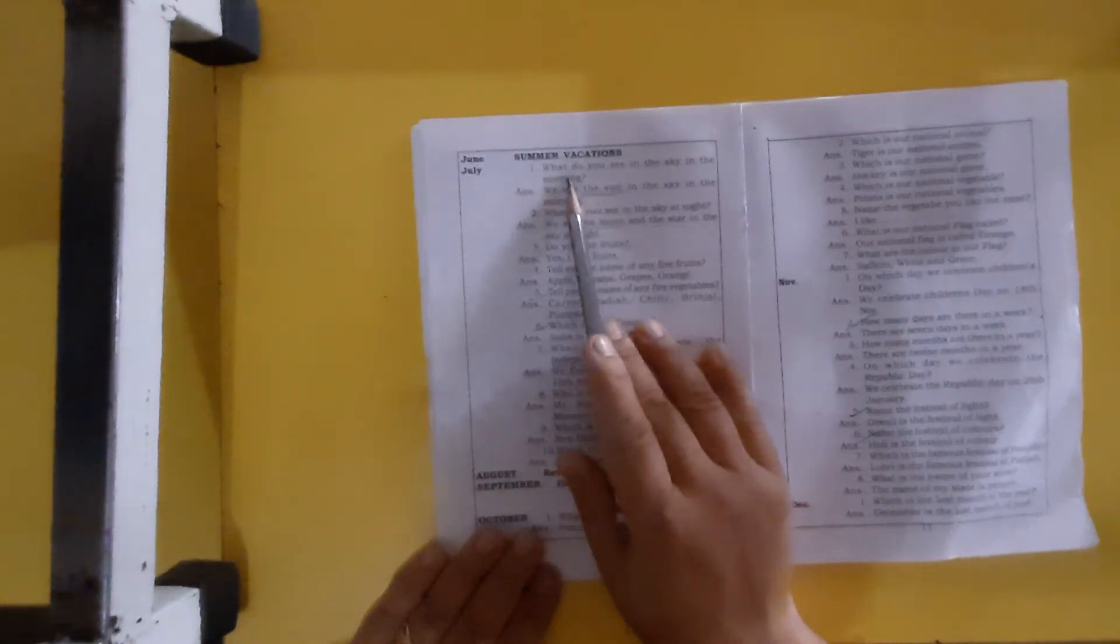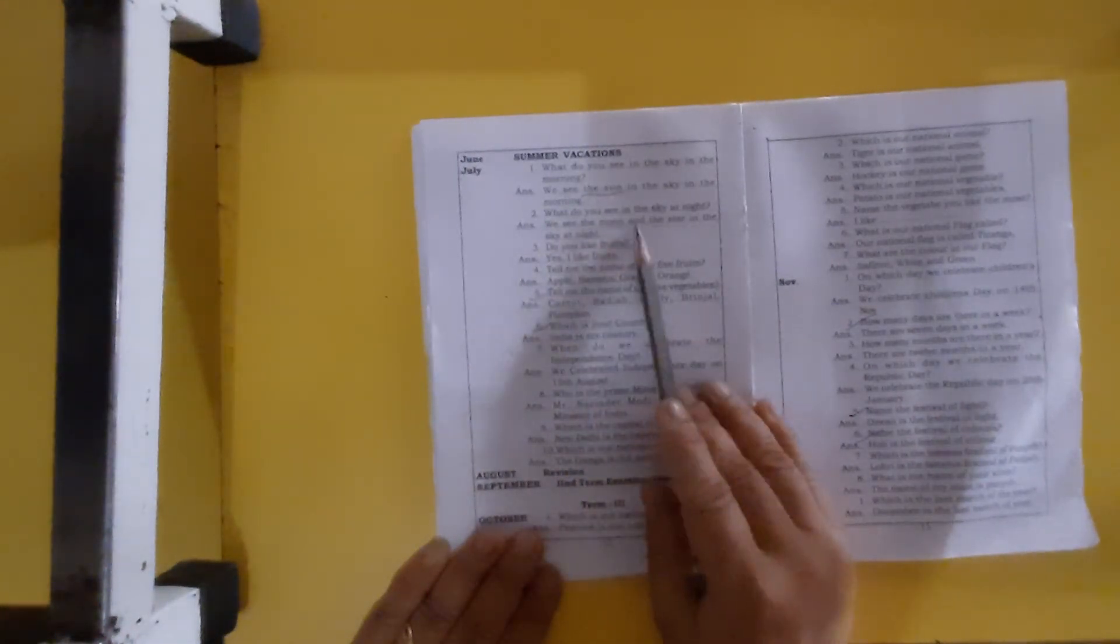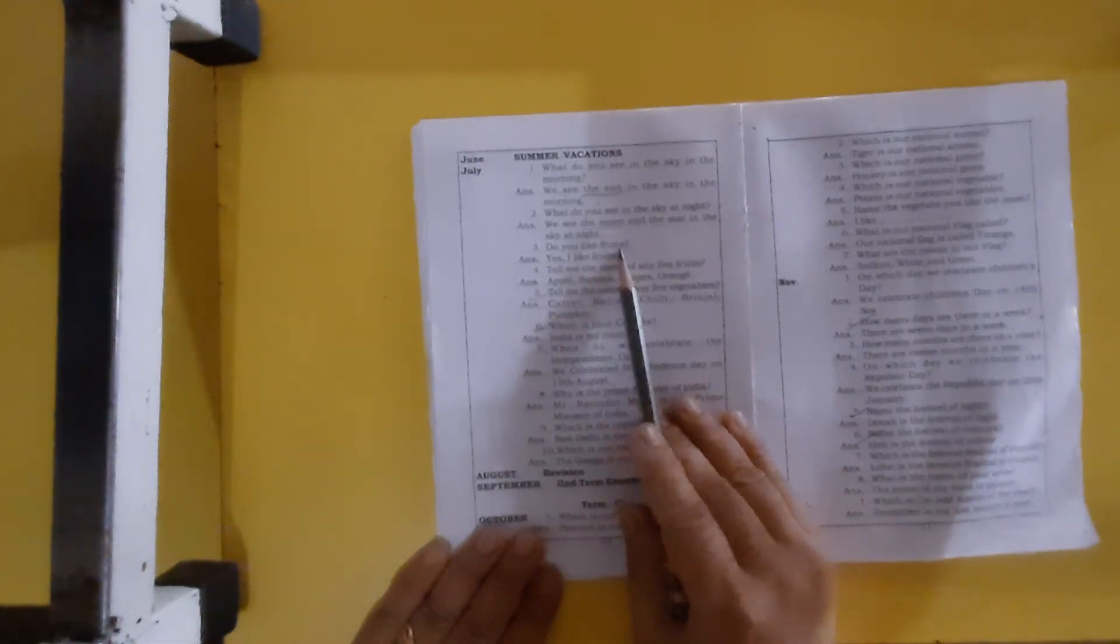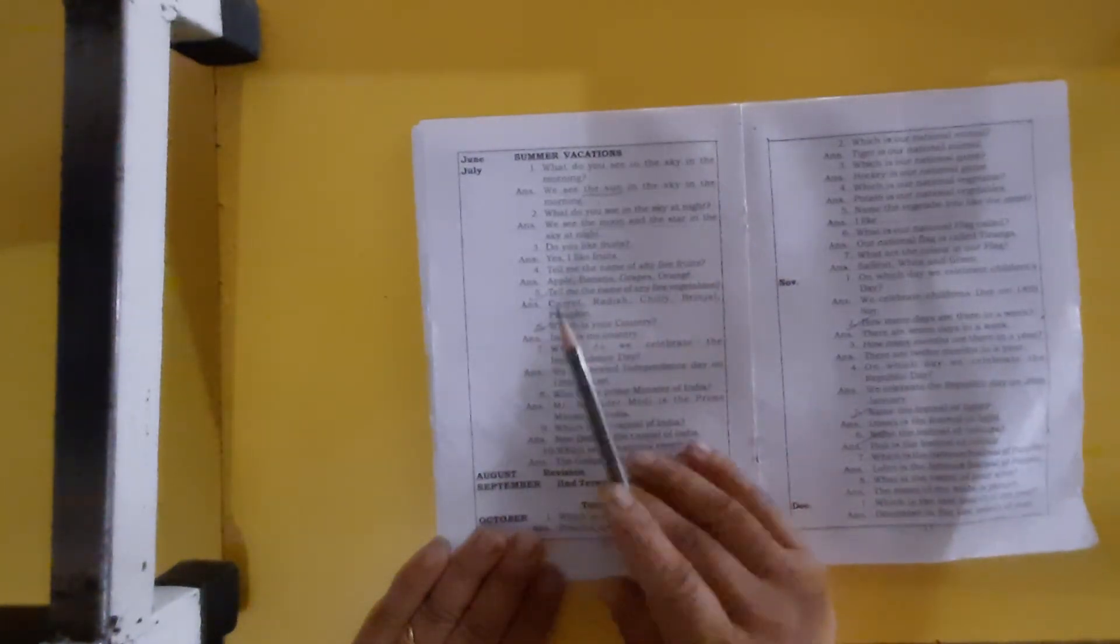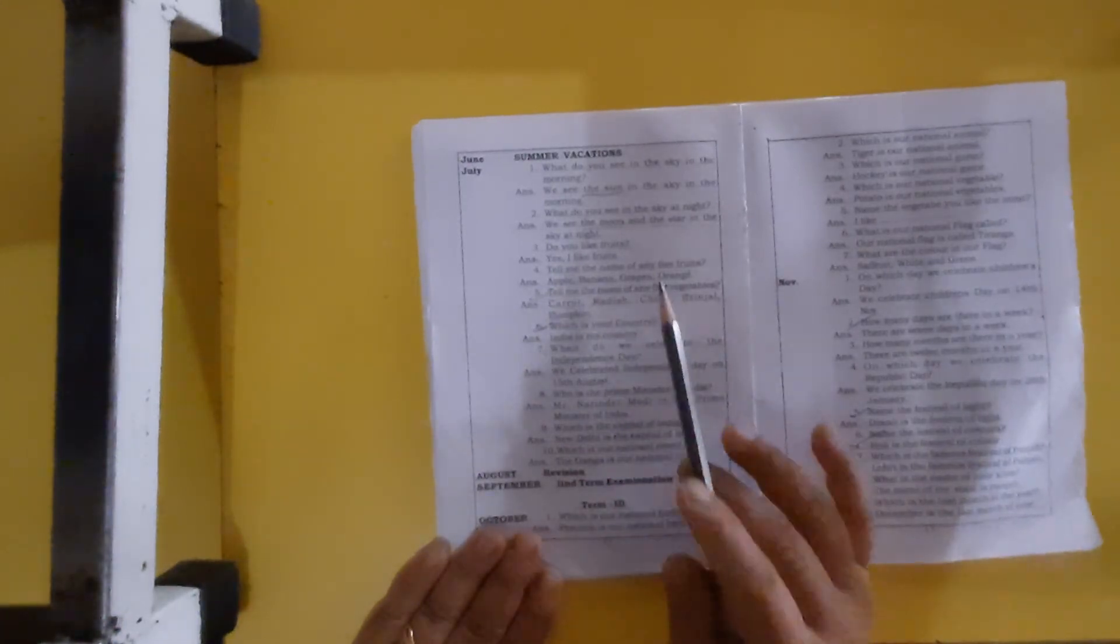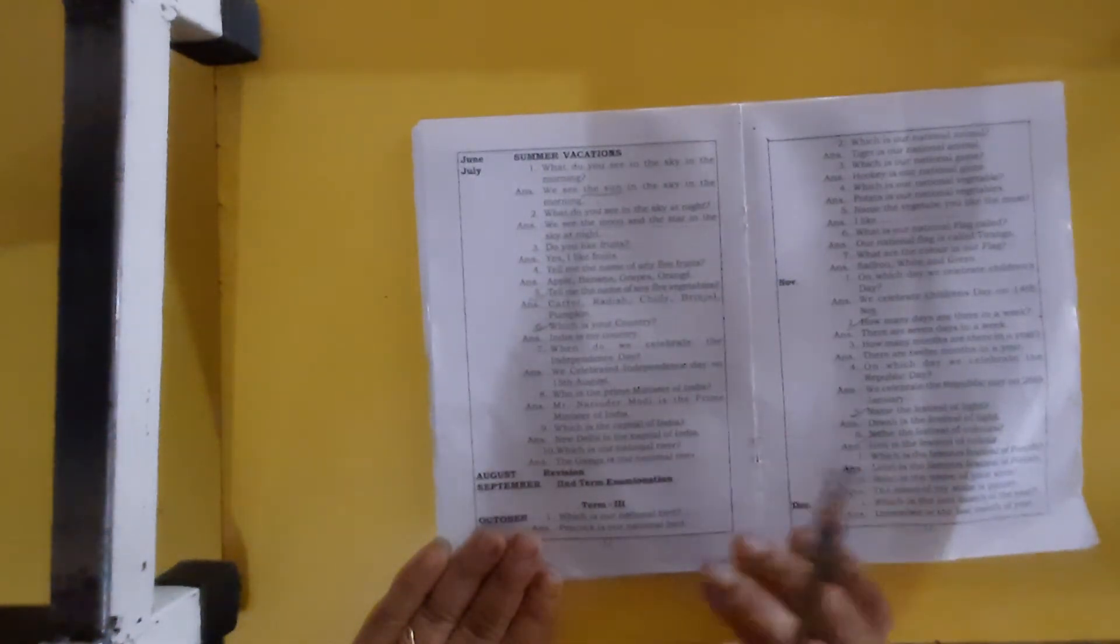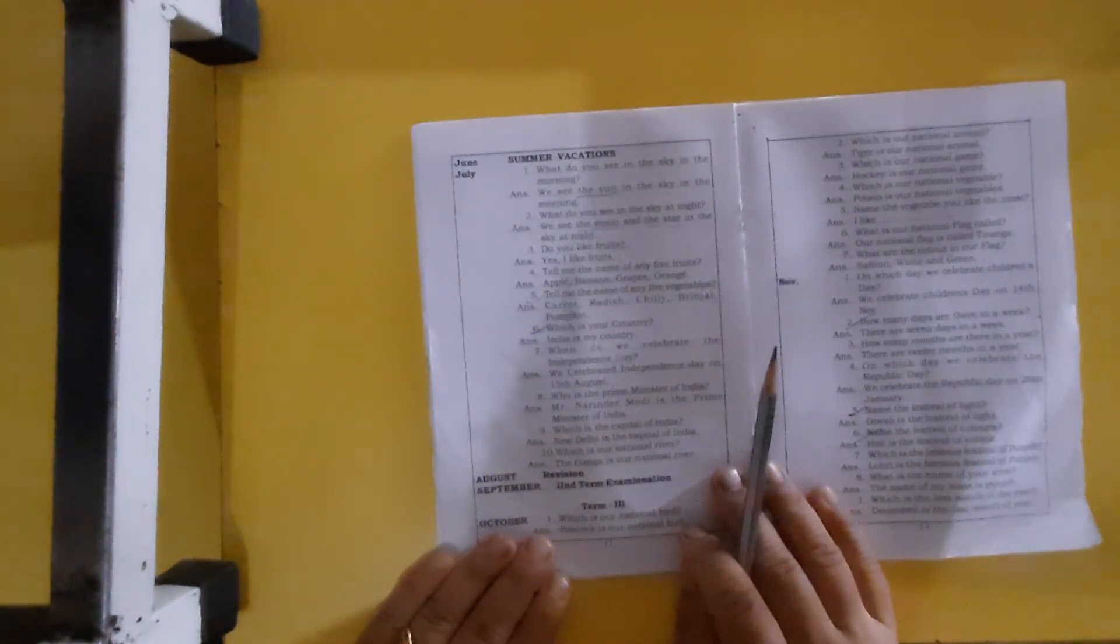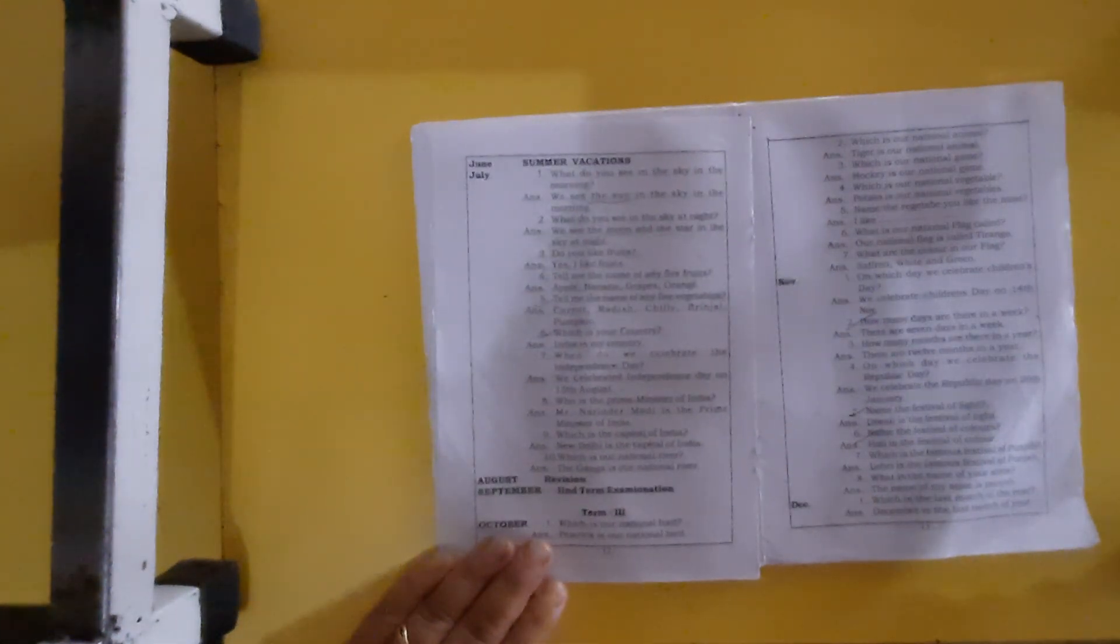Let's revise again. What do you see in the sky in the morning? The sun. What do you see in the sky at night? The moon and the stars. Do you like fruits? Yes, I like fruits. Tell me the name of any five fruits: apple, mango, banana, grapes, orange. Tell me the name of any five vegetables: carrot, radish, chili, brinjal, pumpkin. You have to learn these five questions well and also learn your EVS topic Food We Eat properly, children. Okay children, bye bye.